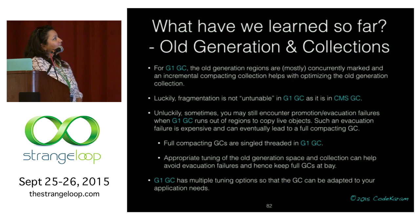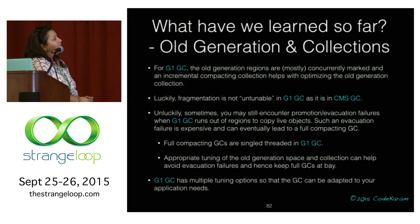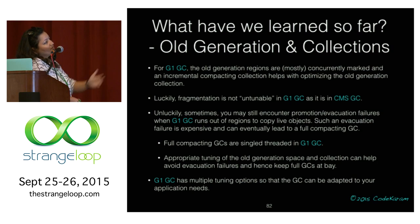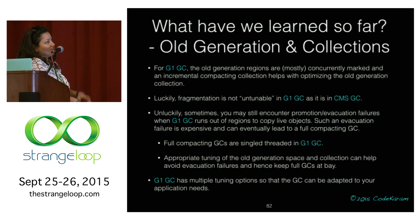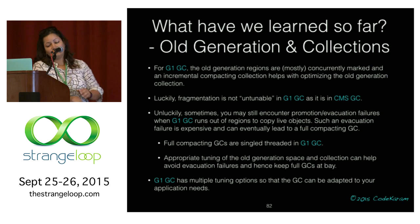What about G1? G1 does incremental compaction, has concurrent marking, and fragmentation is tunable — we can tune fragmentation away. Unluckily, you can have evacuation failures, which we've discussed how to avoid. If you keep getting evacuation failures, eventually you fall back to the full compacting GC — again single-threaded, just like serial GC. But it's tunable, and G1 GC has multiple tuning options.